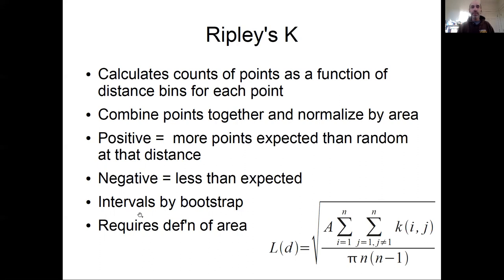And actually the only tricky part about Ripley's K and its calculation is the requirement of a definition of area, which is really quite simple when these donuts of different distance bins do not intersect with the boundaries of the region that you're studying. But it gets much more complicated when they do.